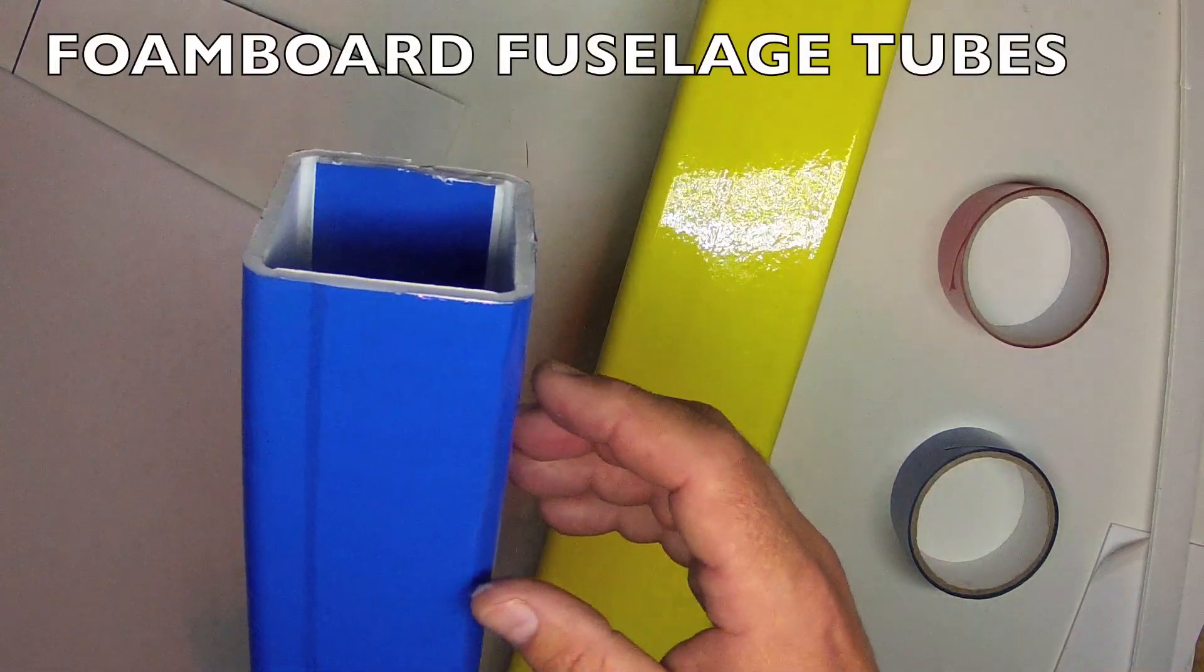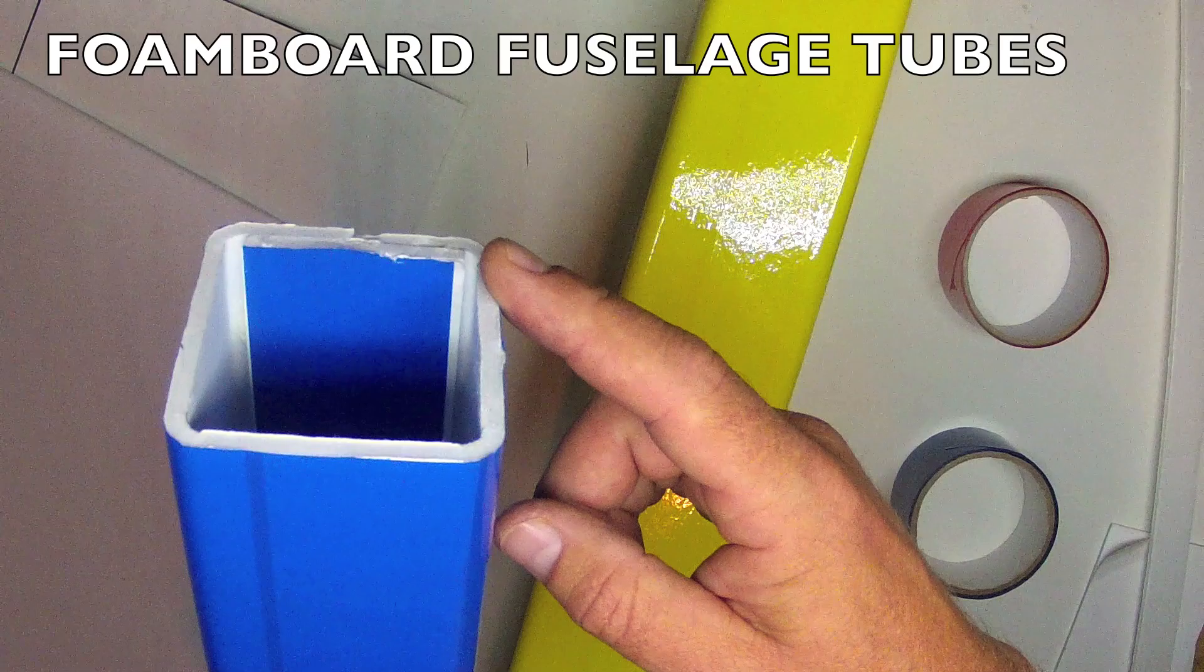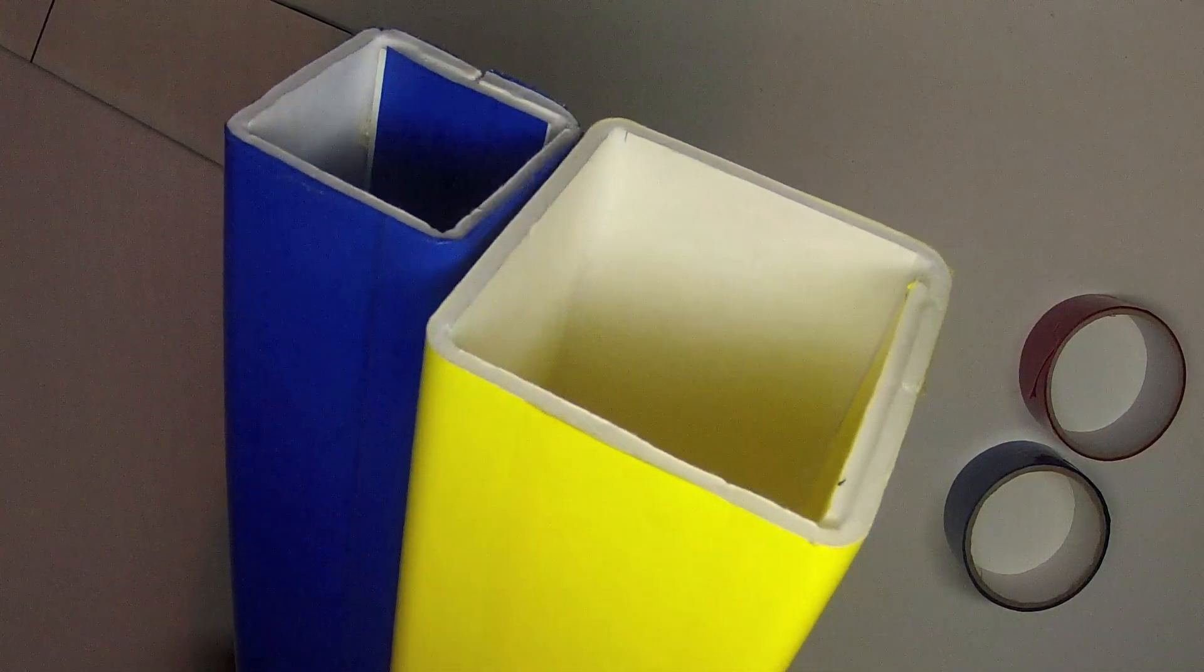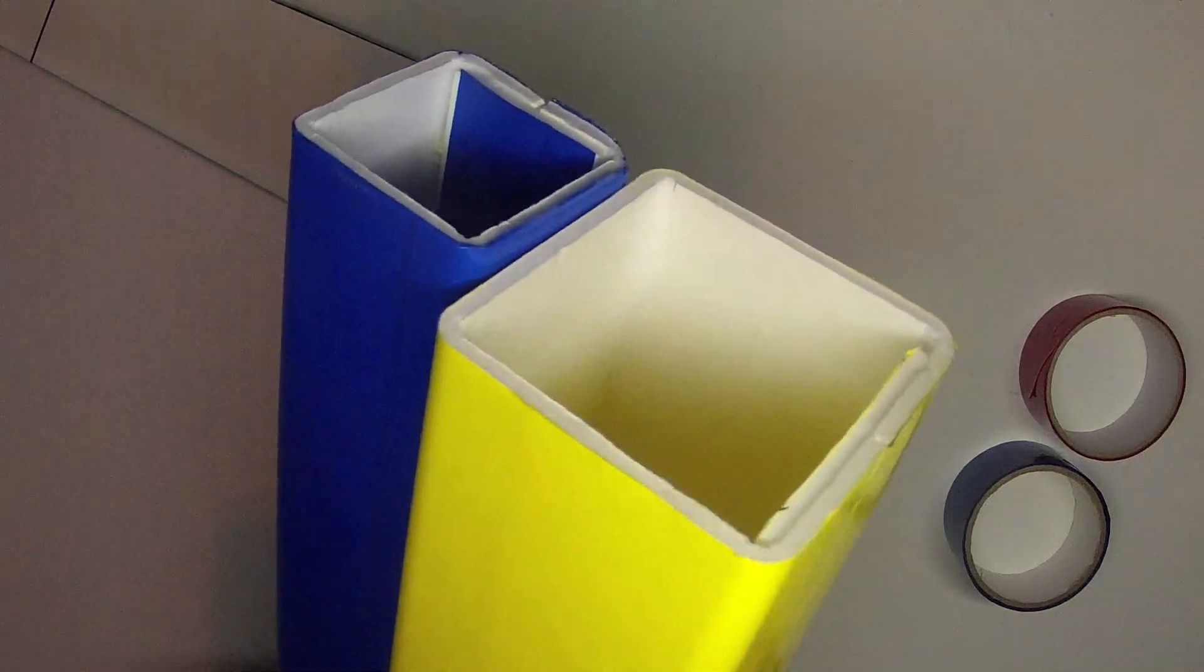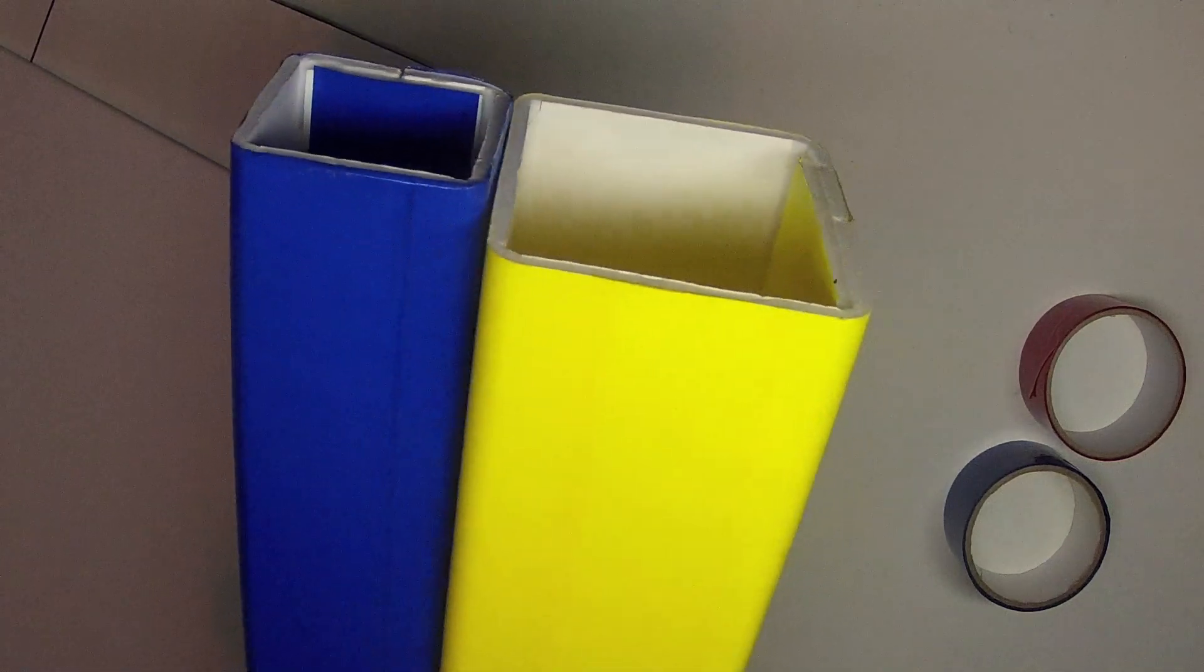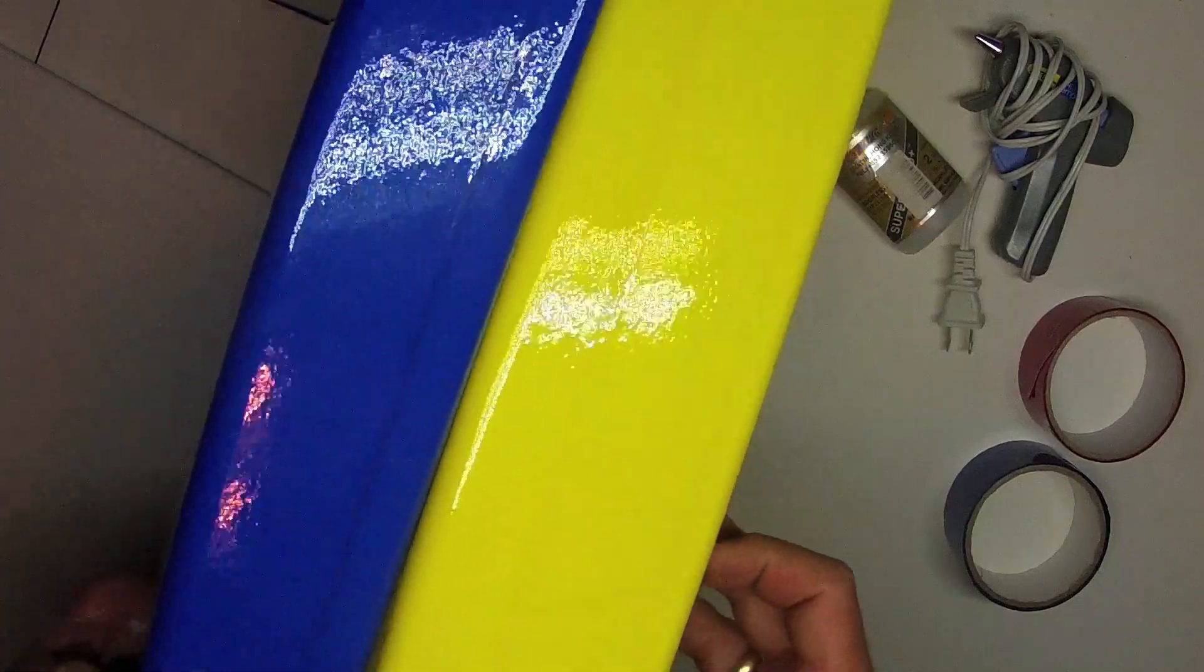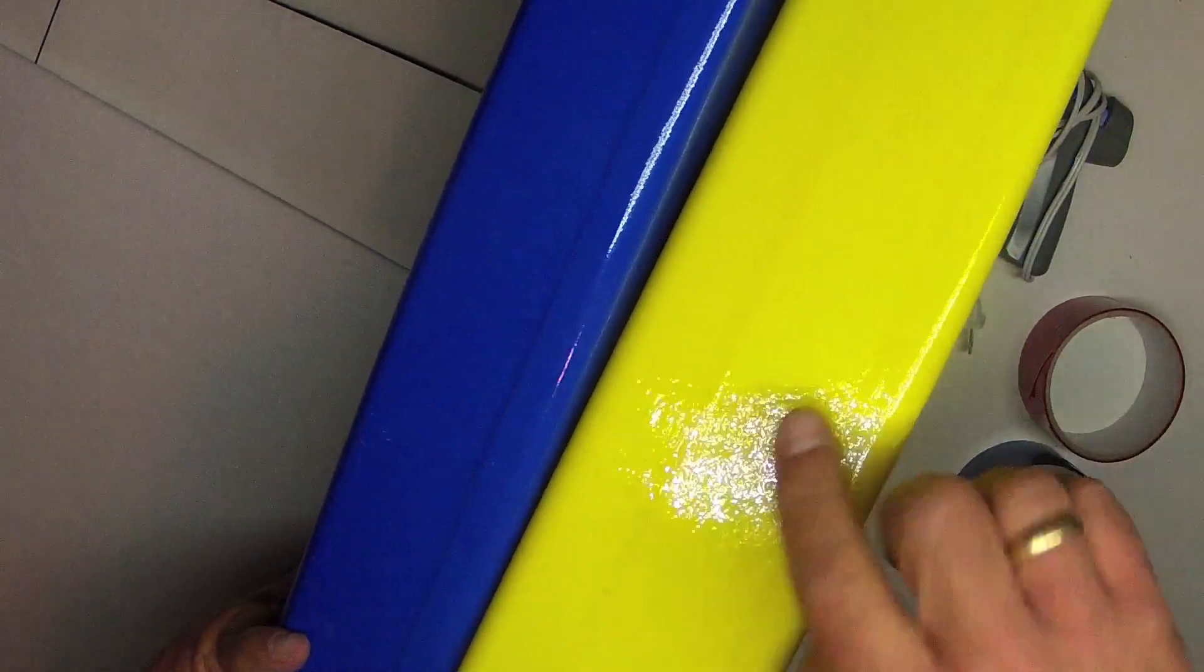In this video I will show you how to make the versatile Experimental Airlines fuselage tube from foam board or depron and colored packing tape. The fuselage tube can be constructed in a variety of different sizes, shapes, dimensions and cross sections including square, rectangular or even triangular. These fuselage tubes are very economical, very light, and completely waterproof on the sides.